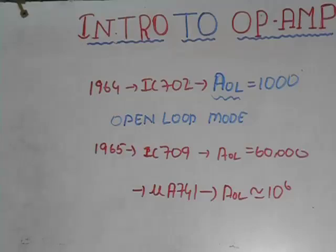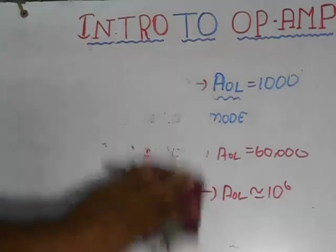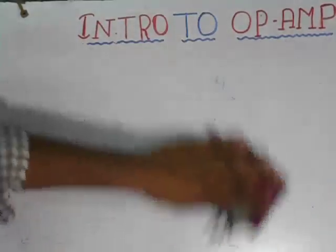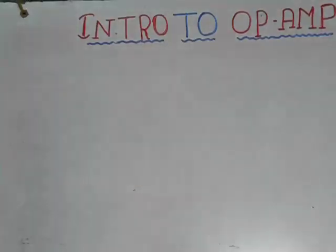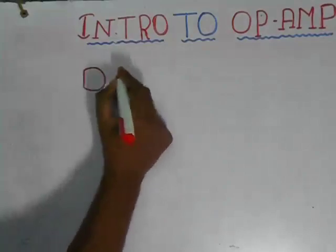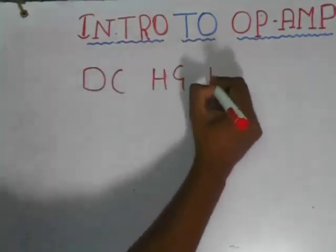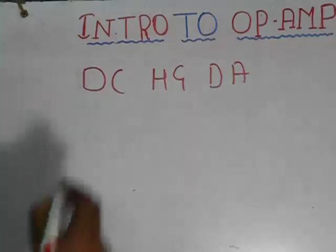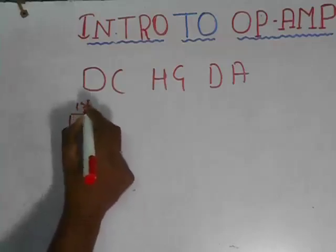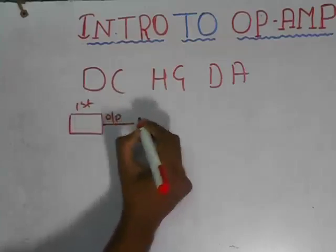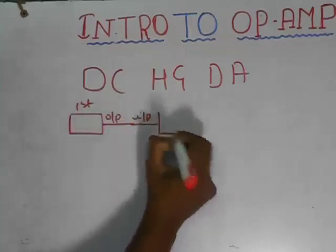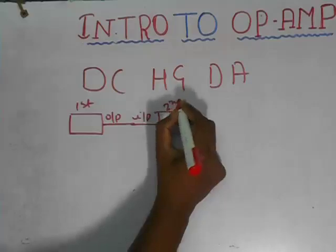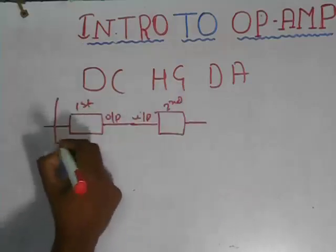Now let us clearly see what an op-amp is. Generally, an op-amp is a direct-coupled, high-gain differential amplifier. What is meant by direct coupling? If you consider an amplifier and the output of the first stage is coupled as input to the second stage of the same amplifier, then the amplifier is said to be directly coupled.